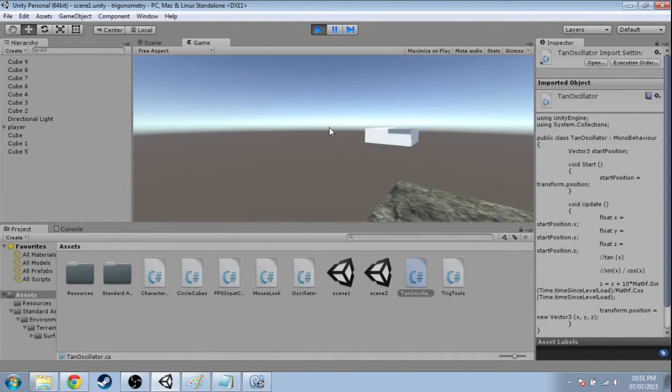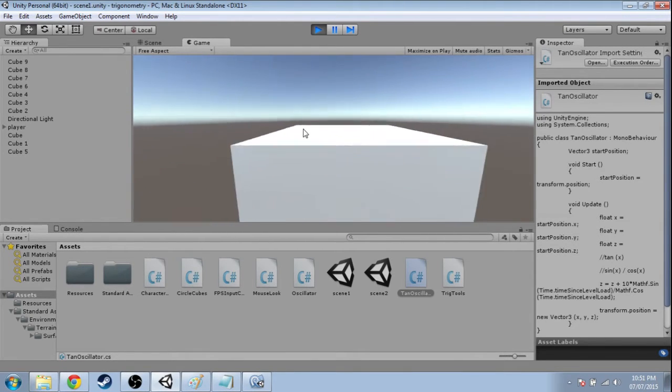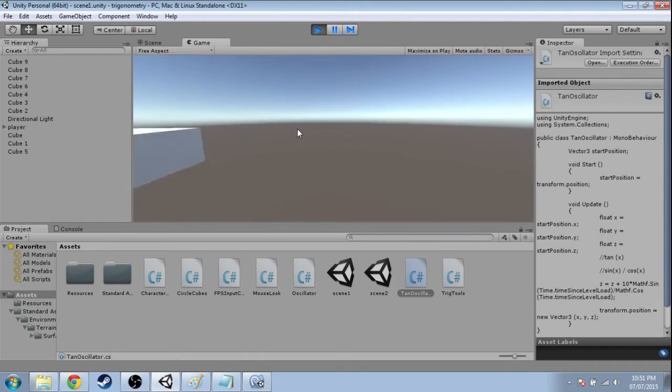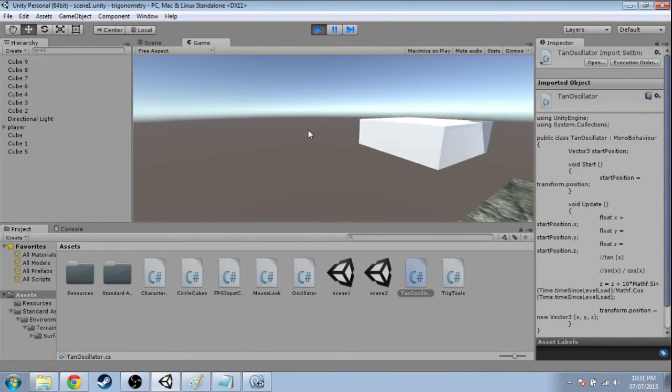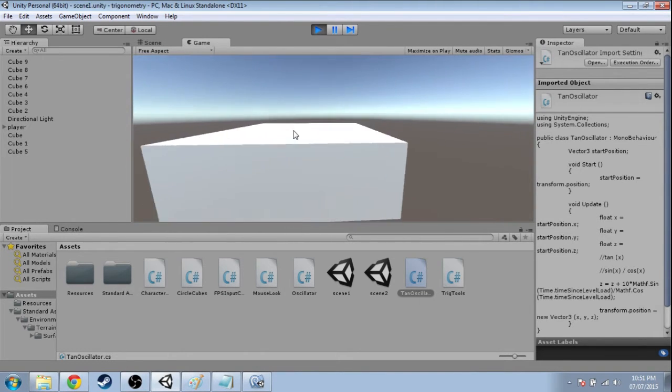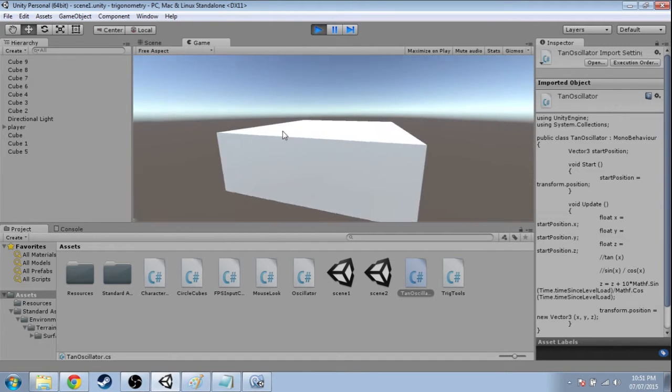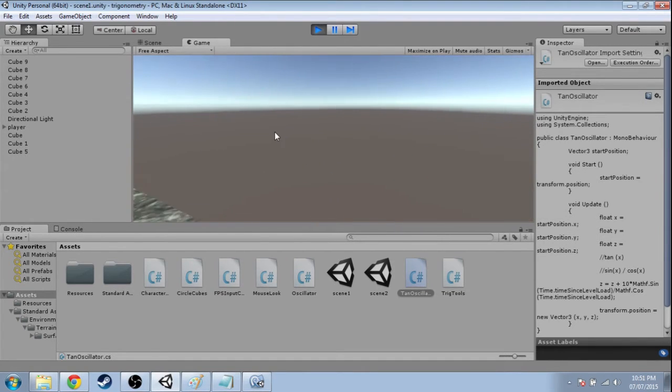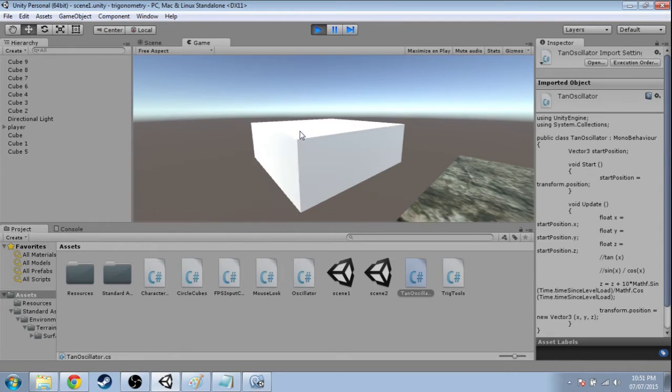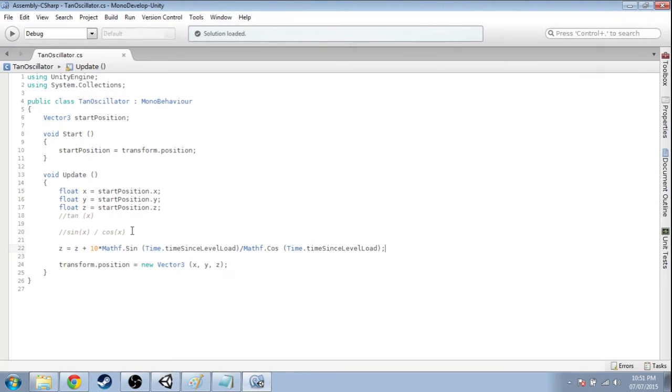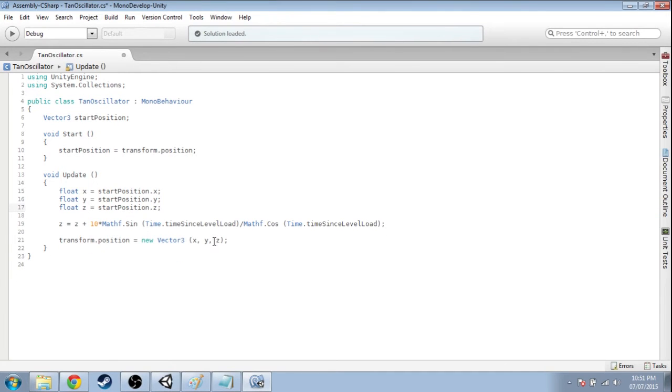Usually when you're making a 3D game and you change your code, then save it and press play, and it's doing the same thing, you probably didn't save your code. But in this case it is doing exactly the same thing because that's what tan is. Tan is sine over cos. Mystery solved.